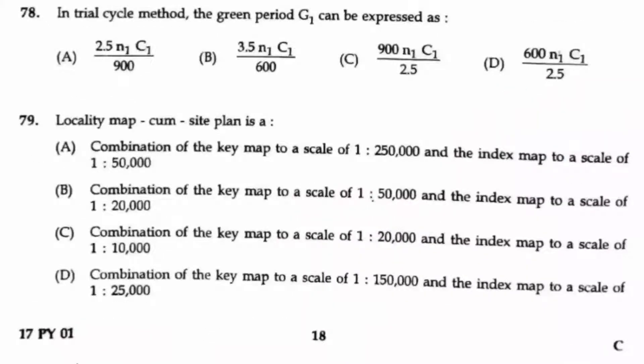Question number 79. The locality map comes site plan is the combination of the key map to a scale of 1 is to 250,000 and the index map to a scale of 1 is to 50,000. So option A is the right answer here.